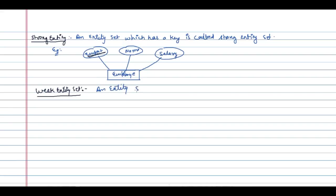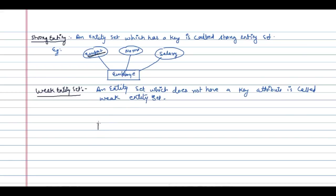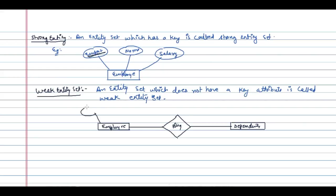An entity set which does not have a key attribute is called a weak entity set. Now assume this is one entity which is Employee, another entity which is Dependents, and the relationship between them — assume it is 'Policy'. Employee is having employee number as key attribute, name, and salary.